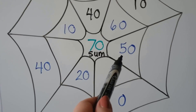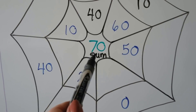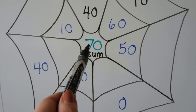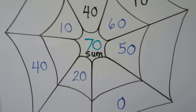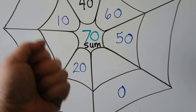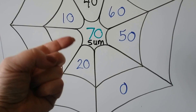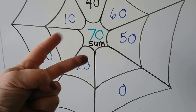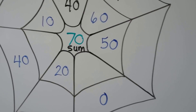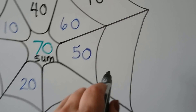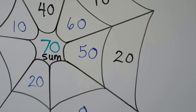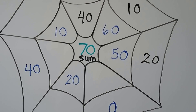What do we need to add to fifty to have a sum of seventy? We have five tens and we need seven tens. We can start with the five tens and count on to seven tens: five tens, six tens, seven tens. We need two tens, and two tens are twenty. Fifty plus twenty is equal to seventy.